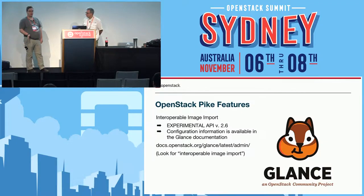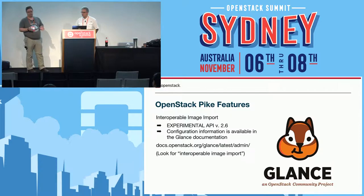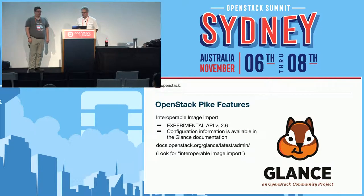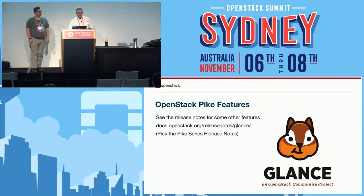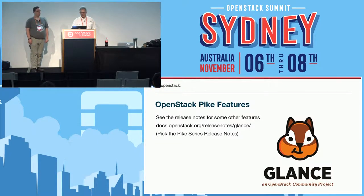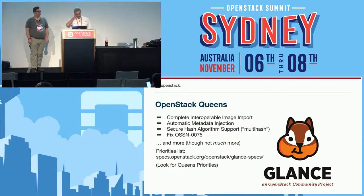We are not doing micro-versioning, so the version number purely advises what the capabilities of the API are — you cannot request version 2.2 specifically, it's just informational. Whenever we do API changes, we bump up the version number. For Queens, we want to complete the interoperable image import, and we'll talk more about that later.